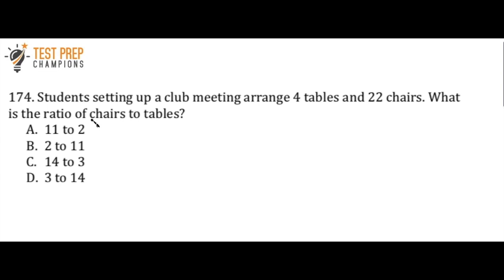So the key here is that we want to see that it's chairs to tables. So what I would recommend is just set up a fraction and write C over T, where C stands for chairs and T stands for tables. And so now I'm going to take this information up here and I'm going to write another fraction. So since it's 22 chairs, I'm going to put 22 as the top number of my fraction, and since it's four tables, I'm going to put four down here for the tables.